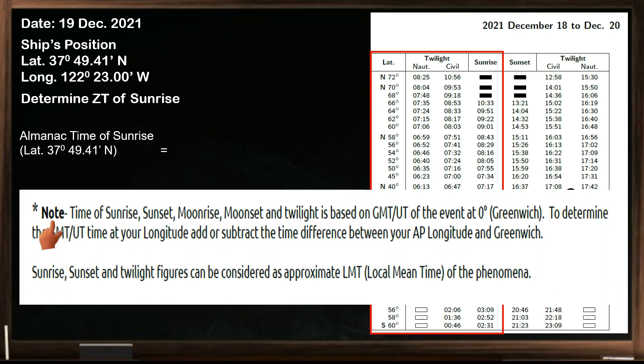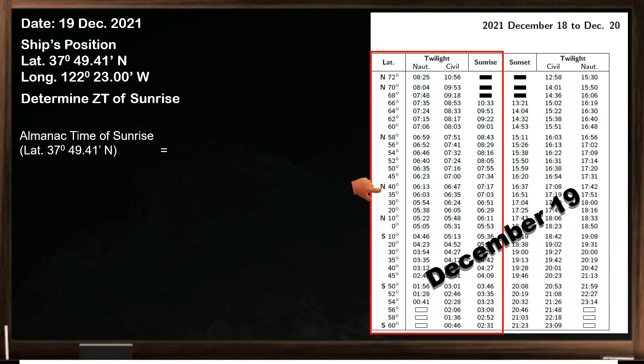Note that the time of sunrise, sunset, moonrise, moonset, and twilight is based on GMT or universal time of the event at Greenwich. The sunrise, sunset, and twilight figures can be considered as approximate LMT or local mean time of the phenomena. Now the ship's latitude is 37 degrees 49 decimal 41 minutes north. If we inspect the table, there is no exact value, but we have latitude 35 degrees and 40 degrees north.